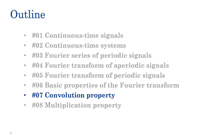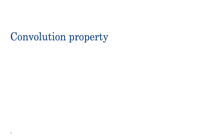In the last class we started learning some of the basic properties of the Fourier transform. We'll continue today by exploring the relationship between convolution and multiplication in the time and frequency domains. Convolution is a very useful operation that allows us to calculate the response of a linear time-invariant system by knowing its input x(t) and its impulse response h(t). We will now show that performing the convolution of two signals in the time domain corresponds to multiplying their respective Fourier transforms.